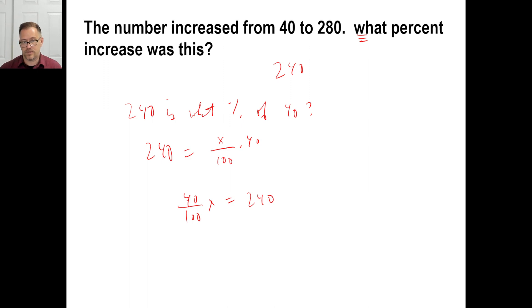And, we can just, we know we need to multiply by 100 over 40. So, we got the X there. And, we got a zero here and a zero there. 24 times 100 is 2,400. 2,400 divided by 4 is 600. So, it is a 600% increase. There you go. And, that's the increase in percent.